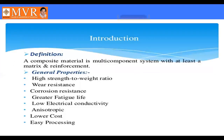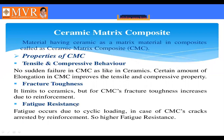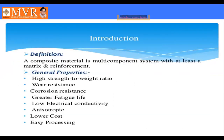A composite material is a multi-component system with at least a matrix and reinforcement. The general properties of composite materials include a high strength-to-weight ratio, wear resistance, corrosion resistance, fatigue life, low electrical conductivity, lower cost, and easy processing.